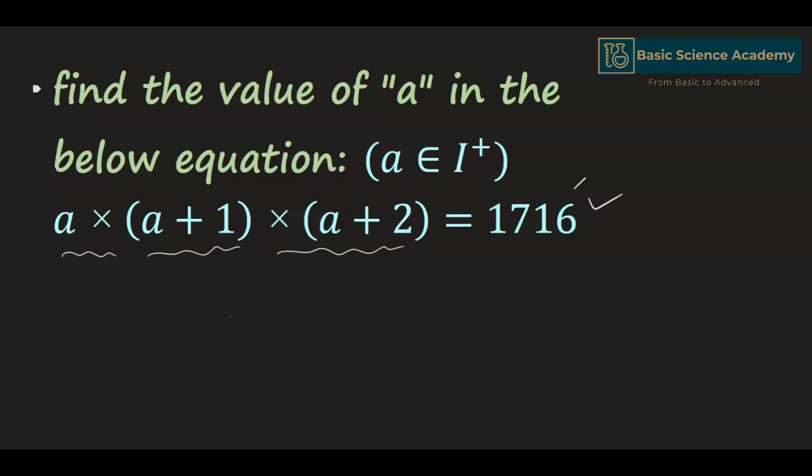Since we have 6 at the unit place, 1716 is divisible by 2 to give 858, which is again divisible by 2 to give 429.